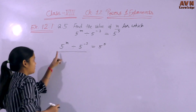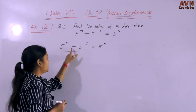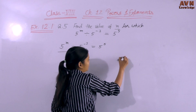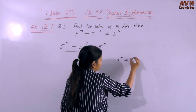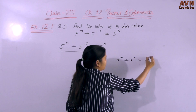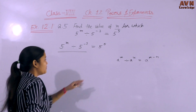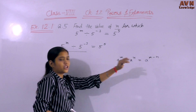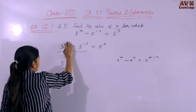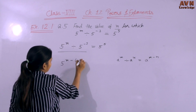In the LHS we have 5 power M divided by 5 power minus 3. The base is the same and division is given, so we use the law of exponents: when the base is the same and powers are different in division, we subtract the powers. So it becomes 5 raised to the power M minus (minus 3).